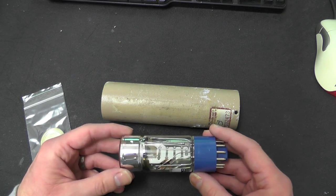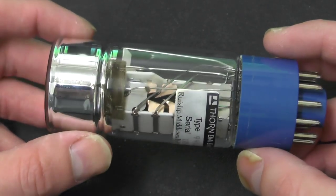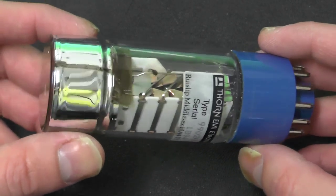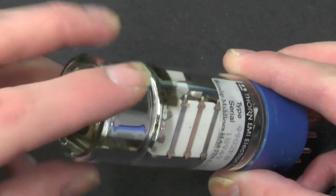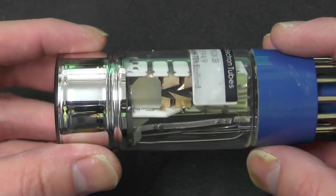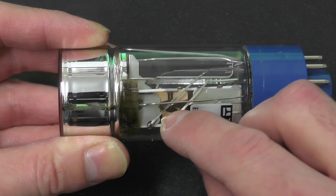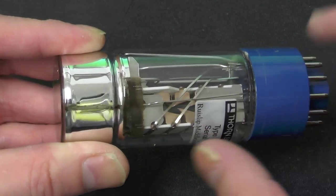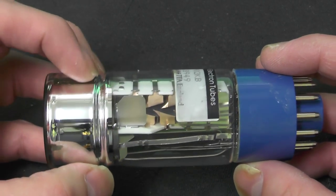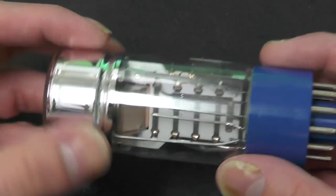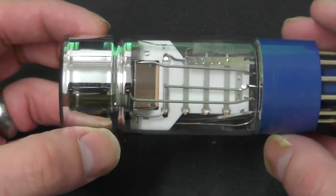So a photomultiplier consists of two parts essentially. You have a photocathode which is this area at the front and what are called dynodes which are these small little sections in here. You can see little bucket shaped parts. Each one of those is called a dynode. These are all inside a vacuum tube so it's completely sealed under a hard vacuum.